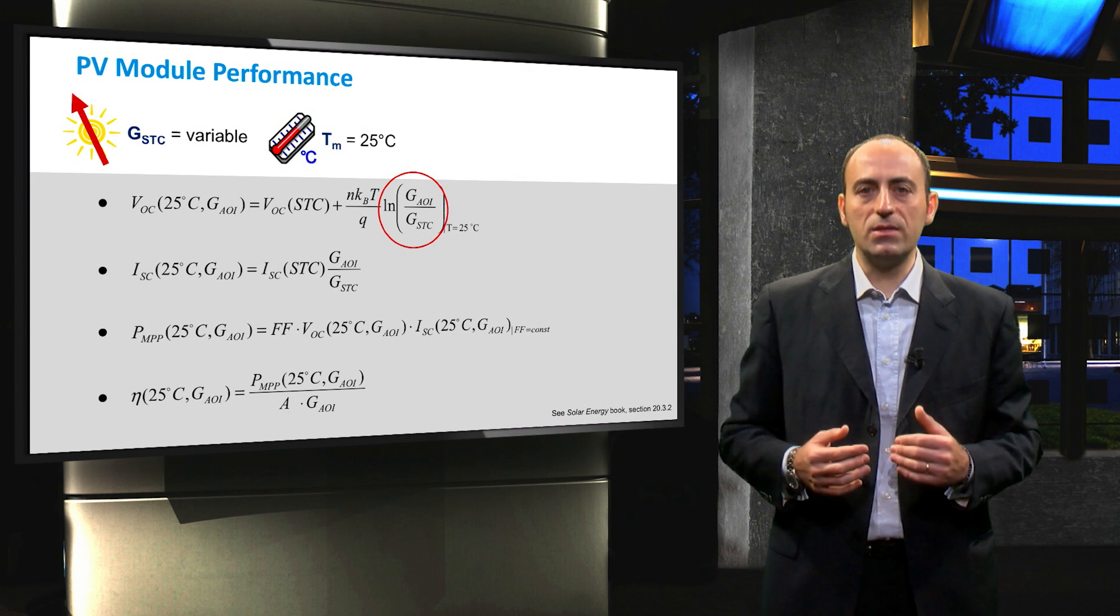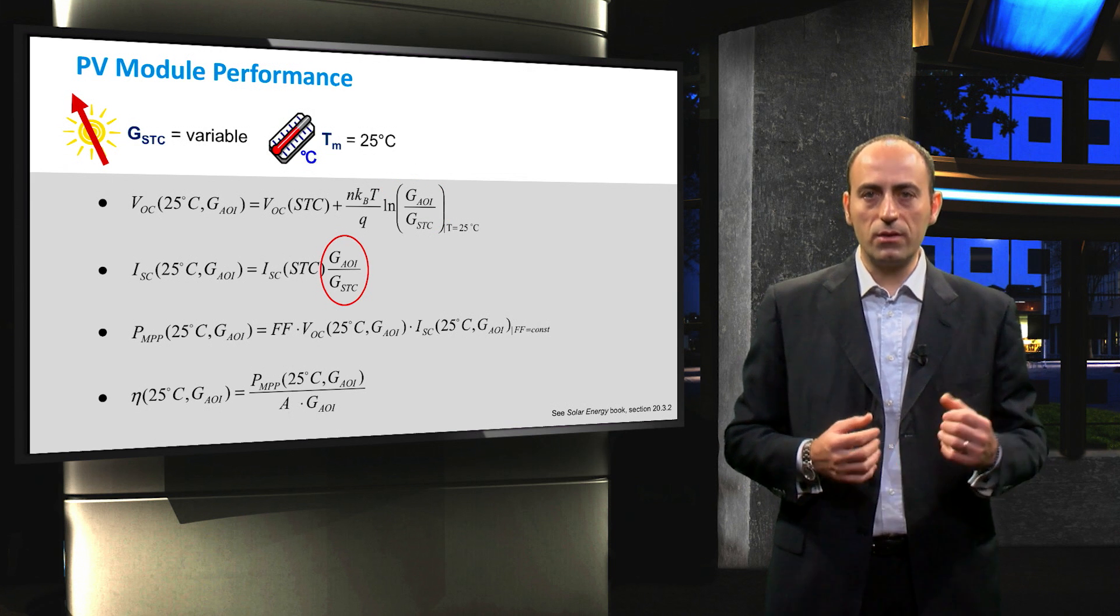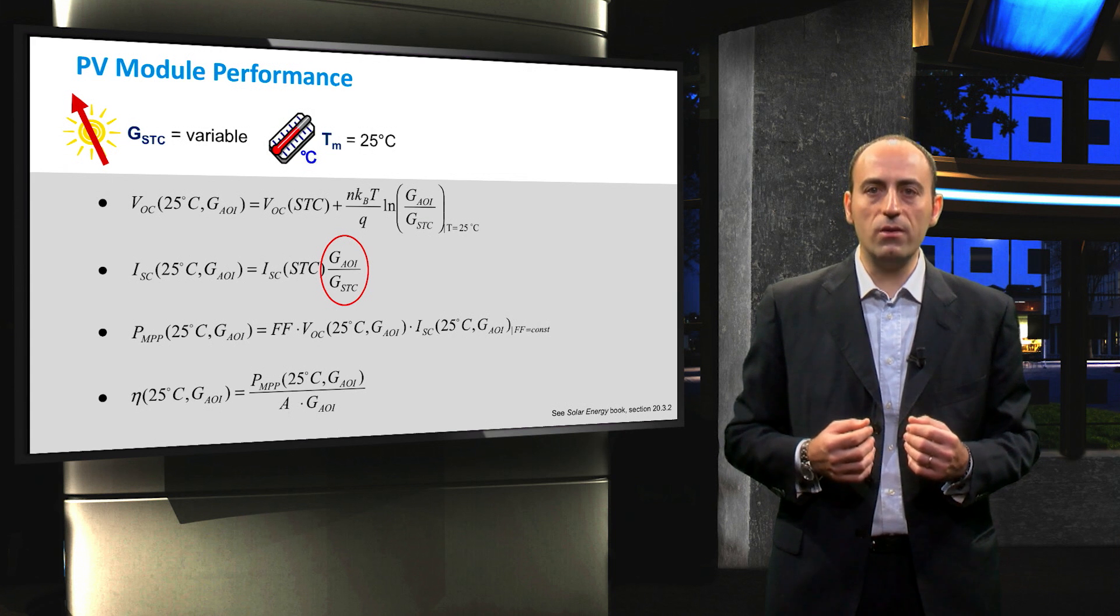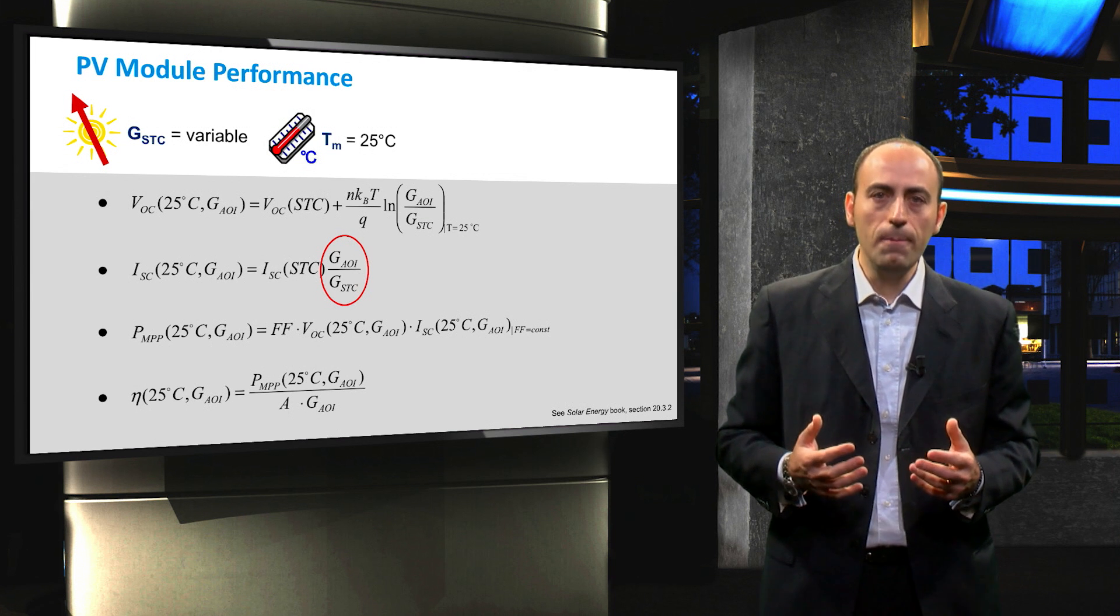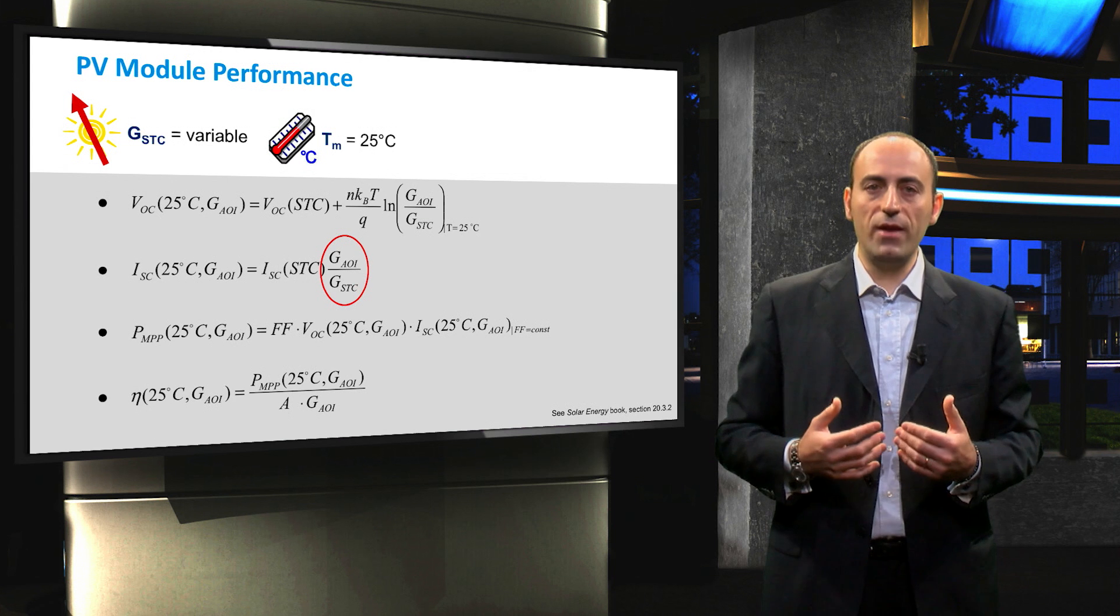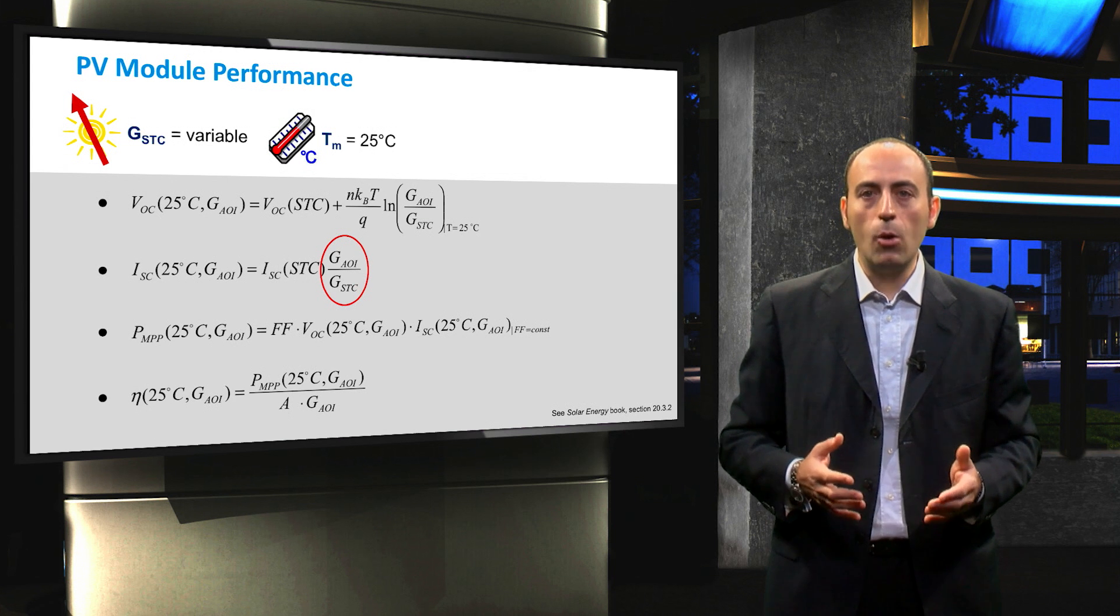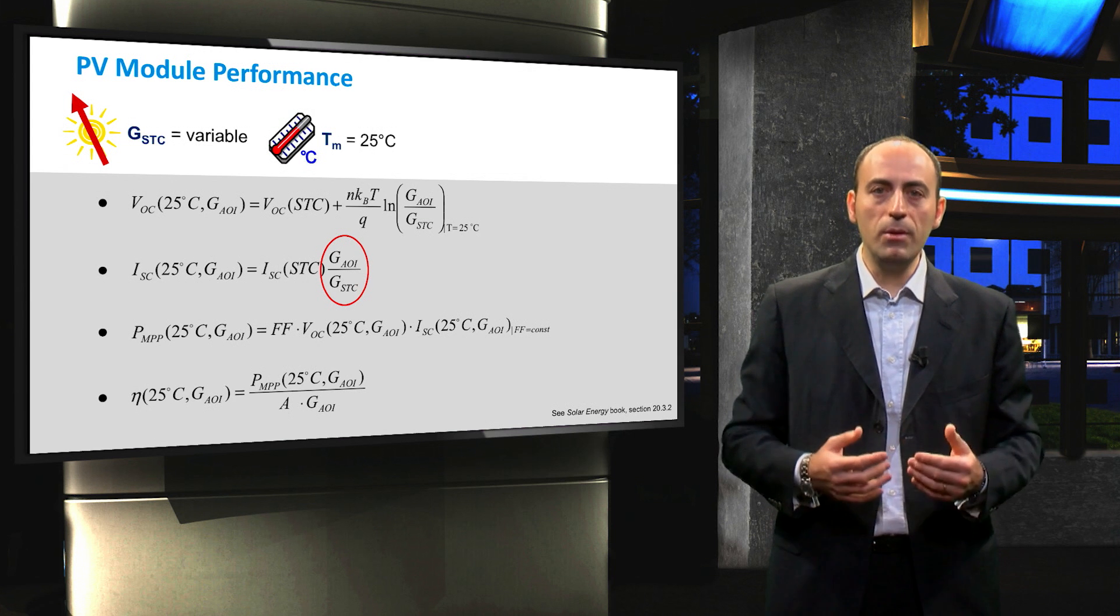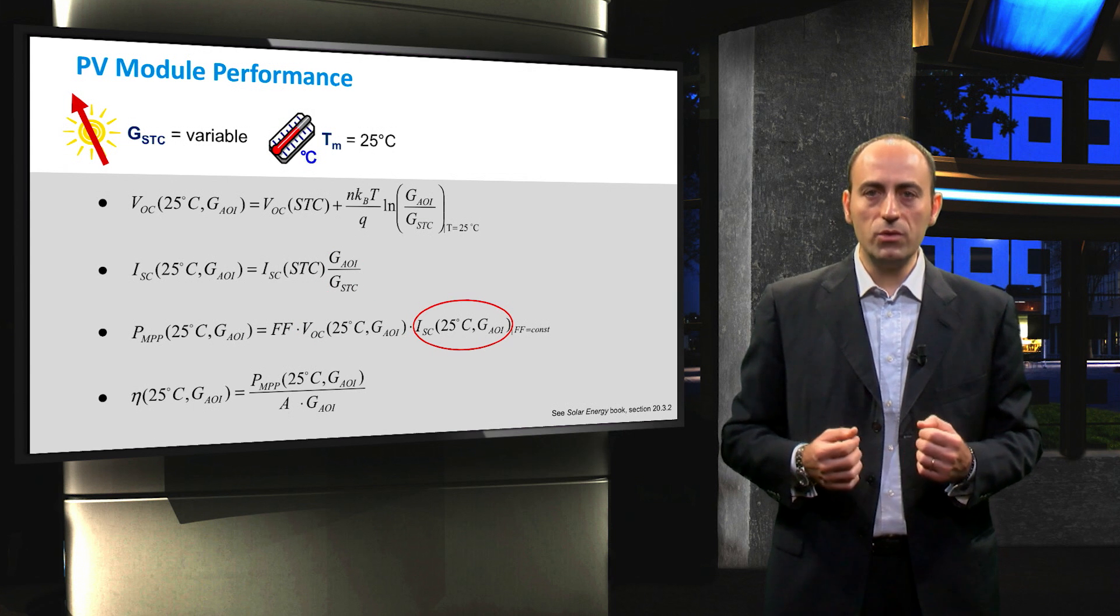In case of ISC, there is a direct proportional relationship between the standard current and the current that you can have from different irradiance values, and it is given by the ratio between the two irradiances. Finally, assuming that the fill factor of the current voltage characteristic is constant, we can obtain the maximum power point power by simply plugging in the open circuit voltage and the short circuit current previously computed.